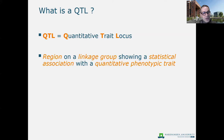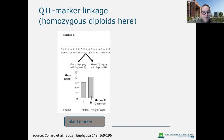But for most traits that breeders work with, this is not the case, so we need some other tools as well. What we are looking for is to find situations where we find an association between a region on a linkage group, represented by markers, and a phenotypic trait.